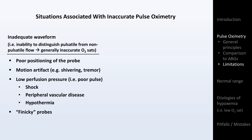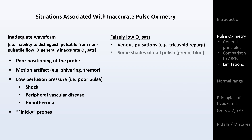Situations that lead to false low O2 sats include prominent venous pulsations, which can result in some of the low venous oxygen saturation influencing the pulse ox reading. This can be seen with severe tricuspid regurgitation. Some shades of nail polish can also impact the pulse ox, particularly green and blue. If this is the case, problems can be averted by placing the pulse ox probe on the finger sideways.